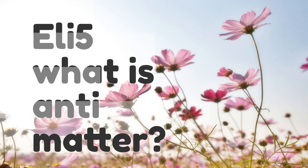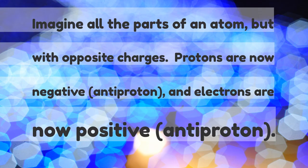Explain like I'm five: what is antimatter? Imagine all the parts of an atom, but with opposite charges. Protons are now negative — that's an anti-proton. And electrons are now positive — anti-proton.